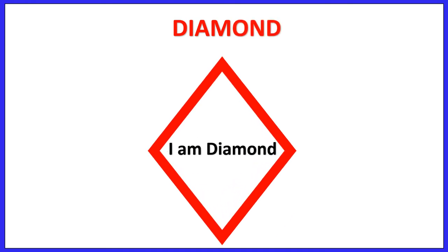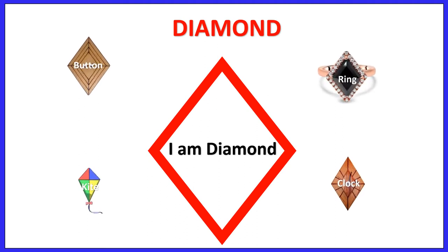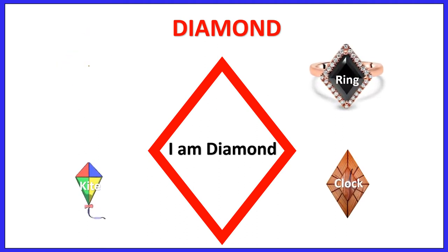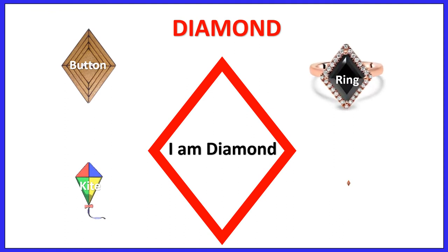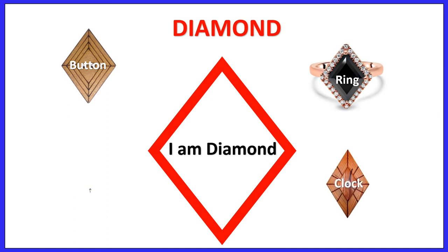Look at the objects which are in diamond shape: Button, Ring, Clock, Kite.